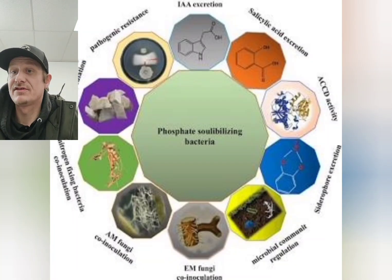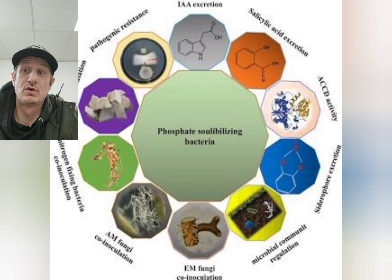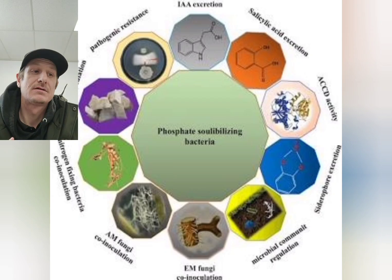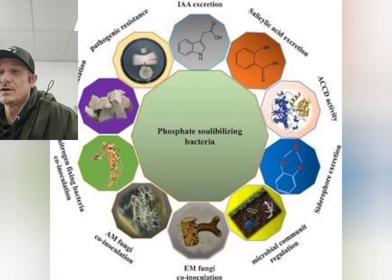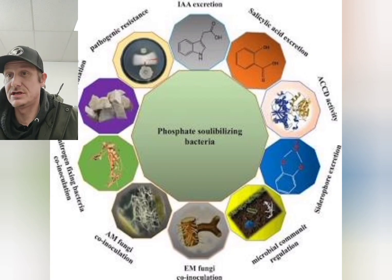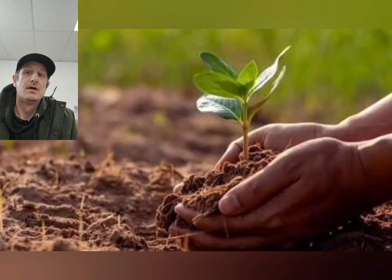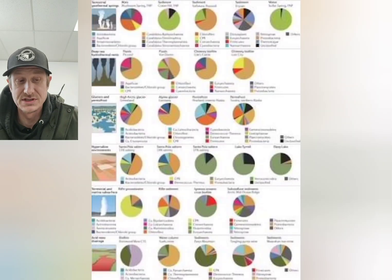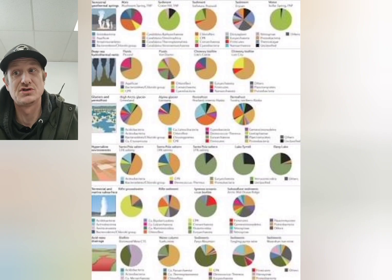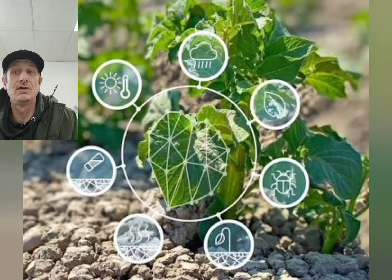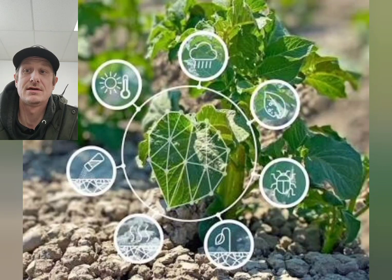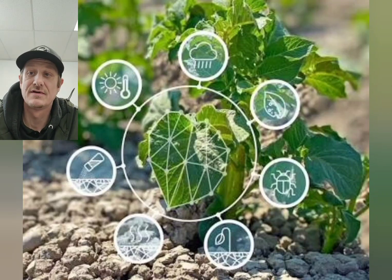Microbial phosphorus cycling is crucial for agriculture and soil health because it reduces the need for chemical fertilizers, which cuts the cost of production and decreases pollution. It improves soil structure, boosting microbial diversity and the ability for roots to penetrate and spread into the soil, and it also enhances plant resilience, leading to healthier, more productive crops.